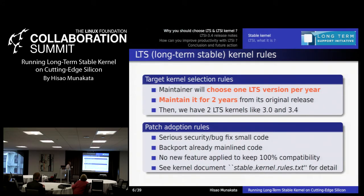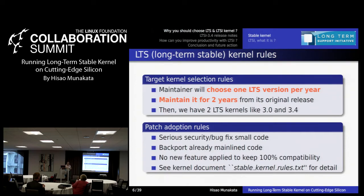There are also adoption policy rules. The LTS kernel only accepts serious security bug fixes and small code changes — no dangerous big code changes can be merged into LTS. People want to keep complete backward compatibility. When you migrate to 3.4.1 or 3.4.2 as minor versions, it must be very conservative. Only security bugs, small code, and already mainlined bug fix code can be backported. No new features are applied. This guideline is documented in the in-kernel document 'stable kernel rules,' defined by Greg.